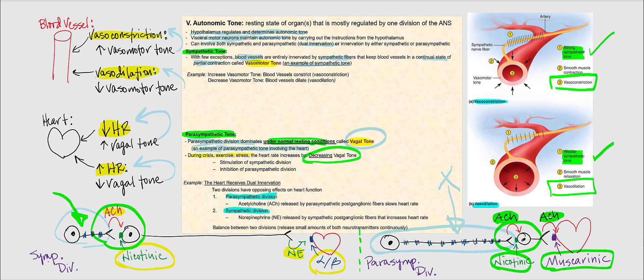Under the sympathetic division, if the sympathetic division takes over and we decrease vagal tone — because we are experiencing crisis, exercising, or undergoing stress — our heart rate will increase. Under the parasympathetic division, when we are at rest — rest and digest — we have an increase in vagal tone and the heart rate decreases.